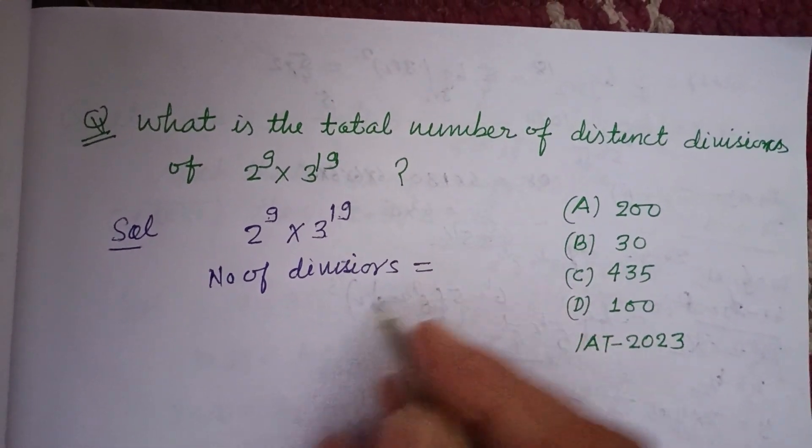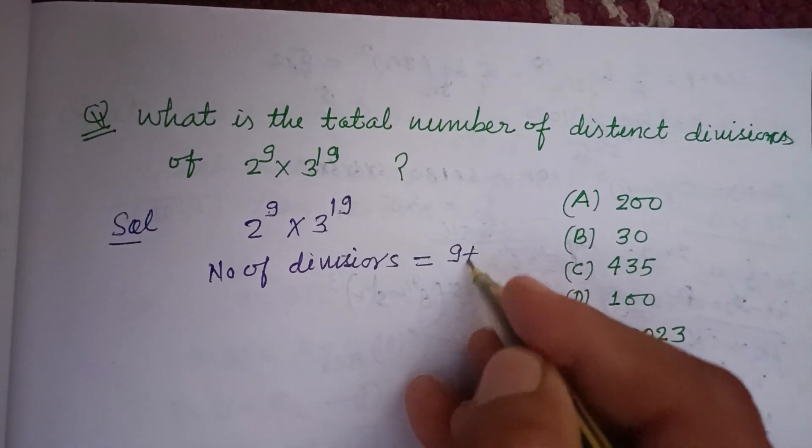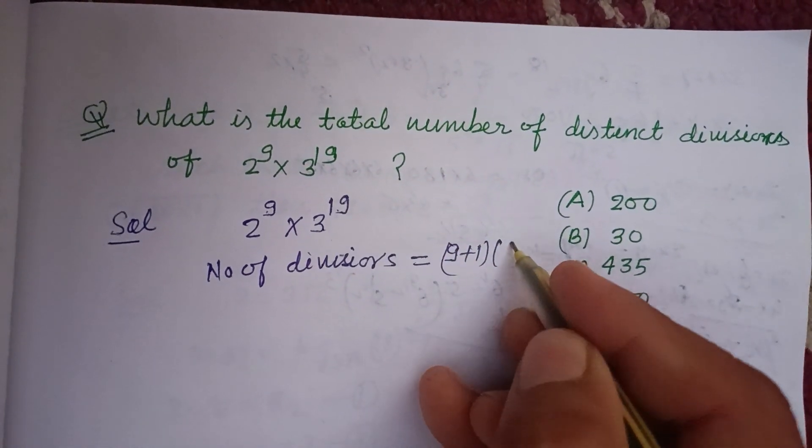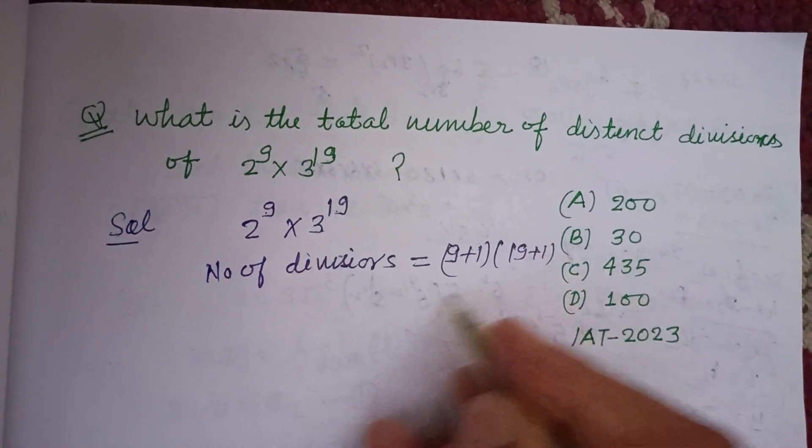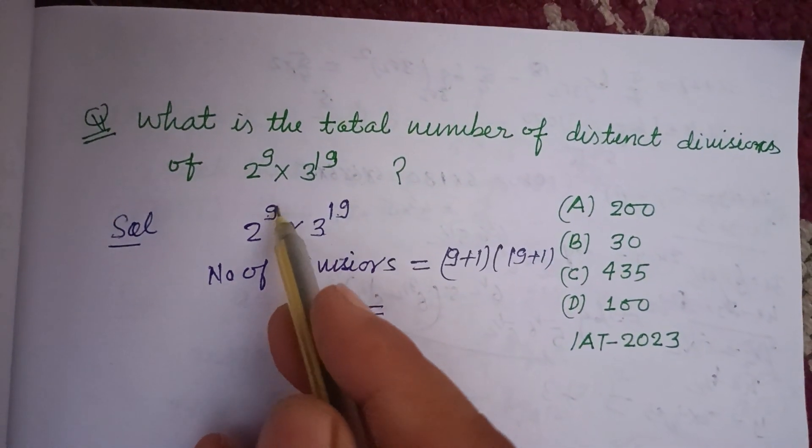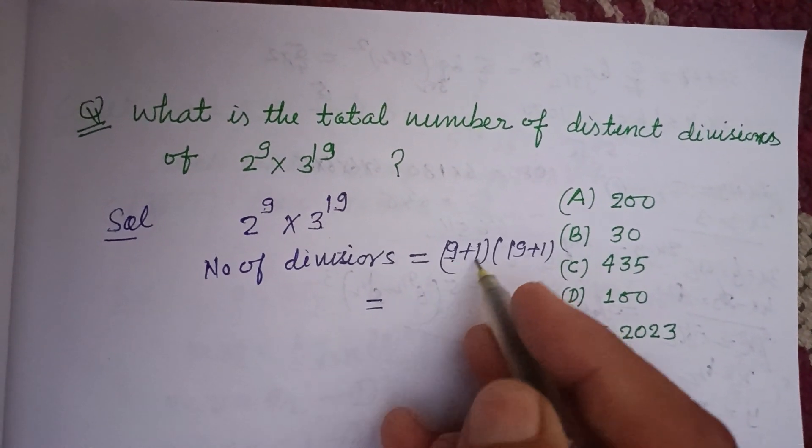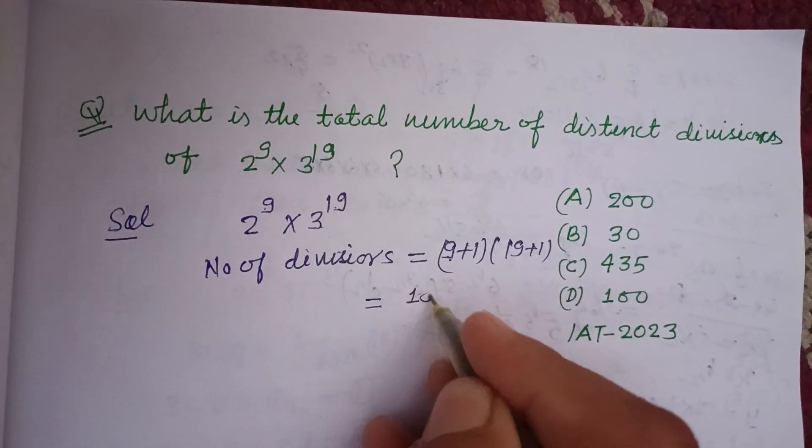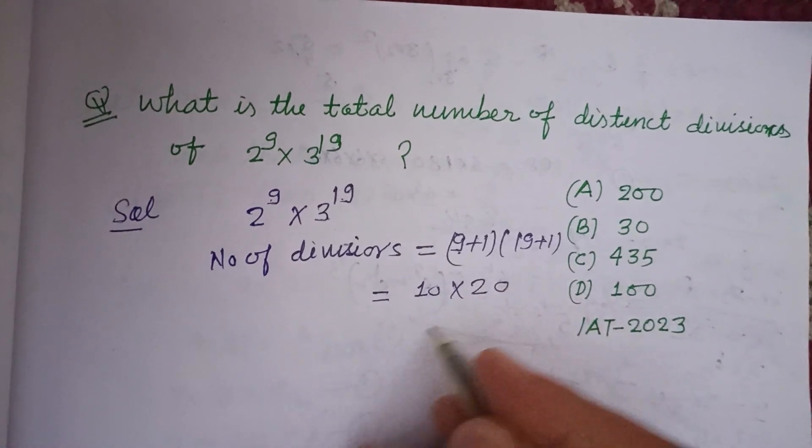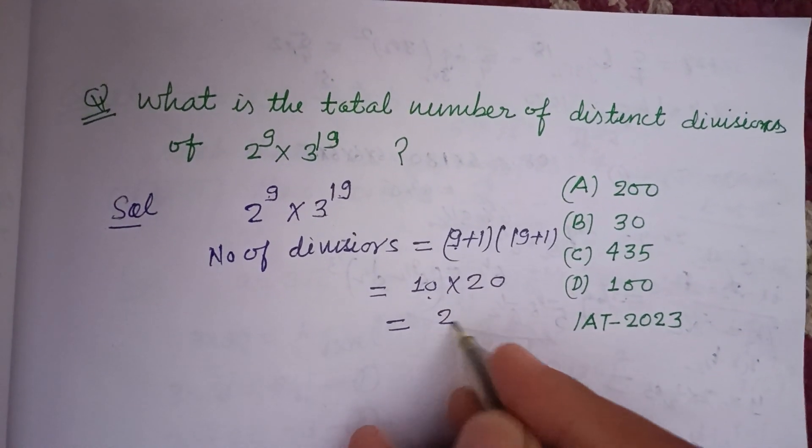equals (9 + 1) times (19 + 1). We add 1 to the power of each prime factor and multiply them. So 9 + 1 is 10, and 19 + 1 is 20, and 10 times 20 is...